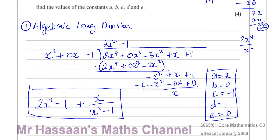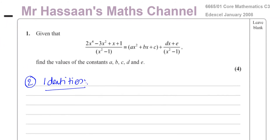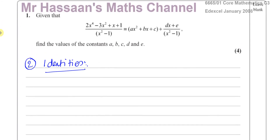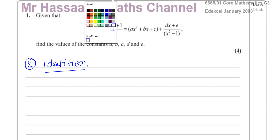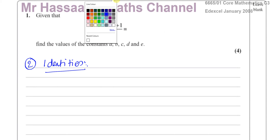Now I'm going to show you the same question using a different method called using identities. You most probably will not use this method in the exam, but it's good to know. Sometimes the question doesn't give you the form of the answer. If the form was not given, you'd need to work it out. For algebraic long division you don't need any extra knowledge, but for using identities you do need to understand something more.